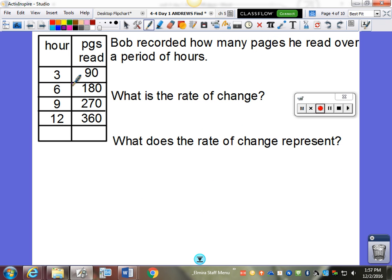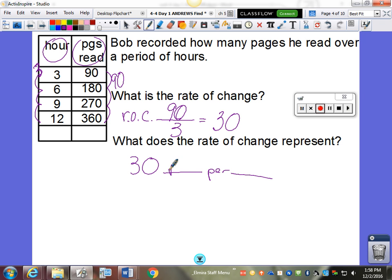Bob recorded how many pages he read over a period of hours. What is the rate of change? Well, rate of change is how are the Y values changing? We're counting by 90s. And this side, we're counting by 3's. 90 divided by 3 is 30. What does it represent? 30 what per what? Well, again, we go back to the headings in the chart. And it's pages per hour.